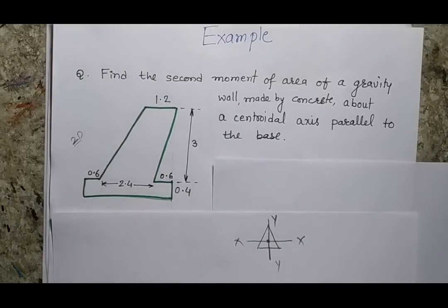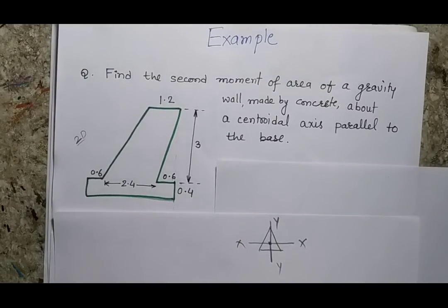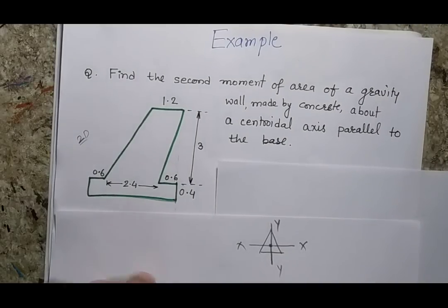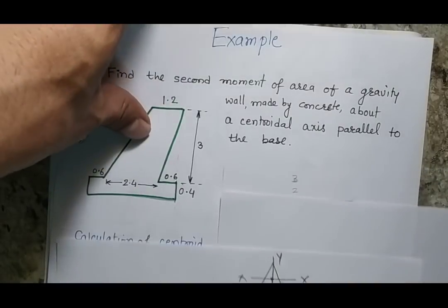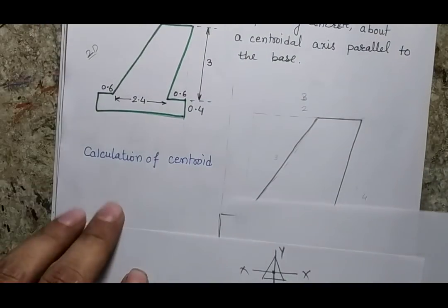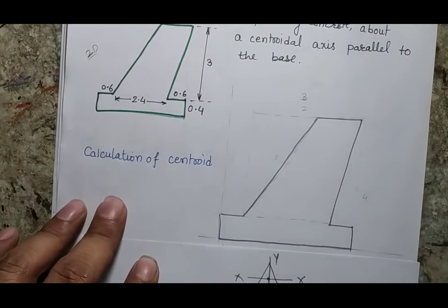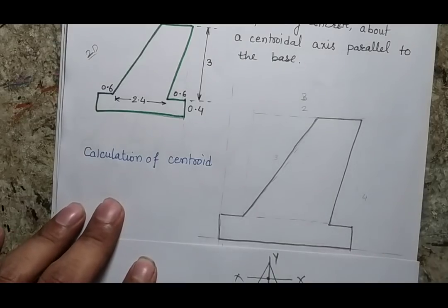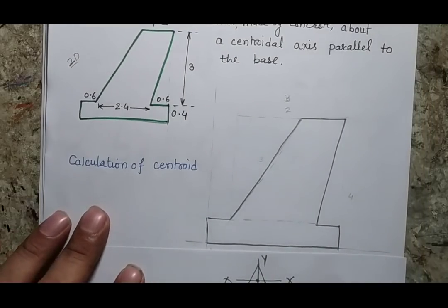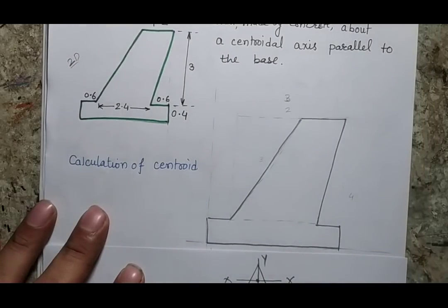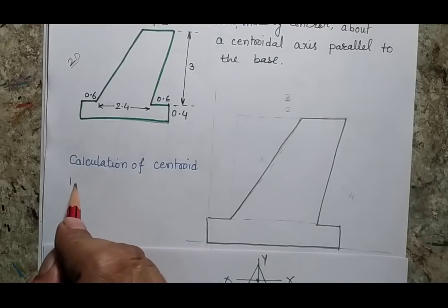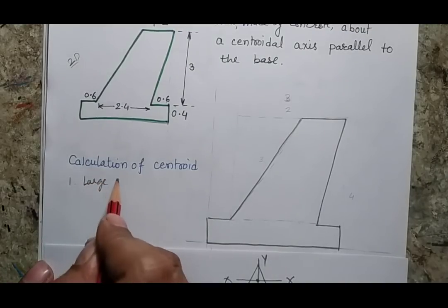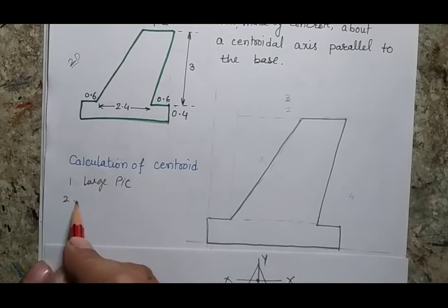The problem is a little complicated and lengthy, but I will try to finish it as quickly as possible. The first job is to make a clear and large picture so that identifying the centroid becomes easy. The second job is to identify the different sections.